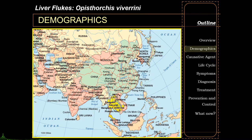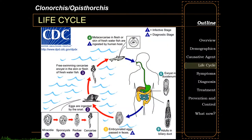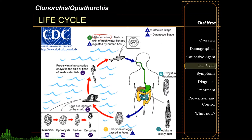The life cycle of Clonorchis and Opisthorchis is very much the same, so we'll discuss them together. The infective stage is similar to Fasciola — the metacercaria — however, the vehicle for infection, or the second intermediate host that humans ingest, would be freshwater fishes, usually small freshwater fishes under the family Cyprinidae, which includes freshwater carps and smaller minnows. Fun fact: goldfish actually belong to this family.